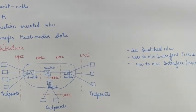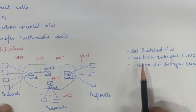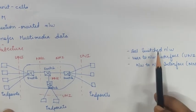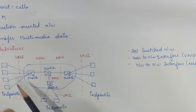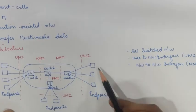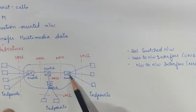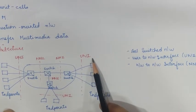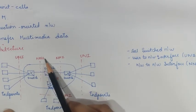ATM is a cell-switched network. The user access devices are called endpoints, and they are connected to the switches through the User Network Interface, or UNI. Where switches are connected to other switches, they are connected via a Network-to-Network Interface, or NNI.